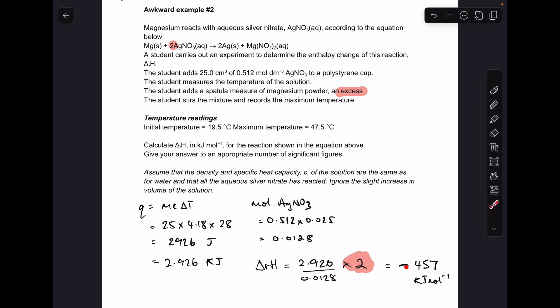So the answer comes out at minus exothermic, 457 kilojoules per mole. 3 significant figures appropriate, just like the first one, because all of the data is to 3 significant figures.